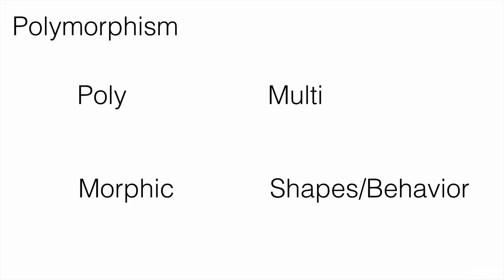Last, but very important, polymorphism. Poly means multi or multiple and morphic means shapes or behavior.